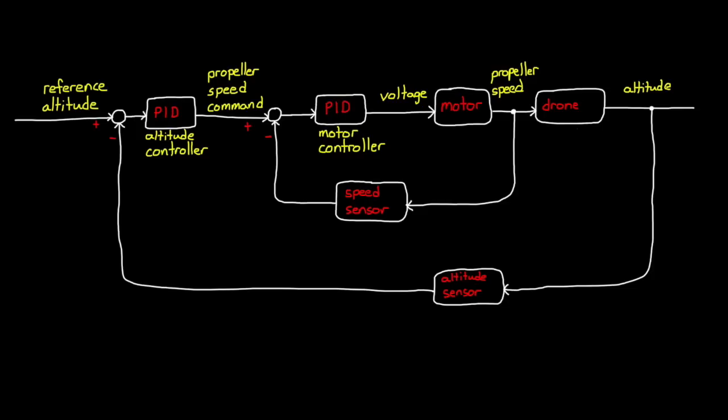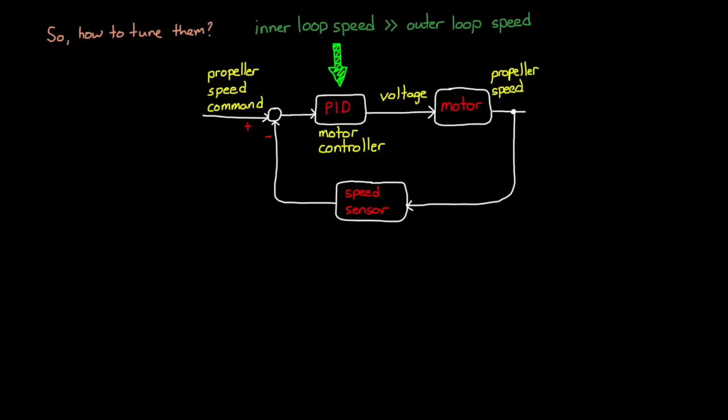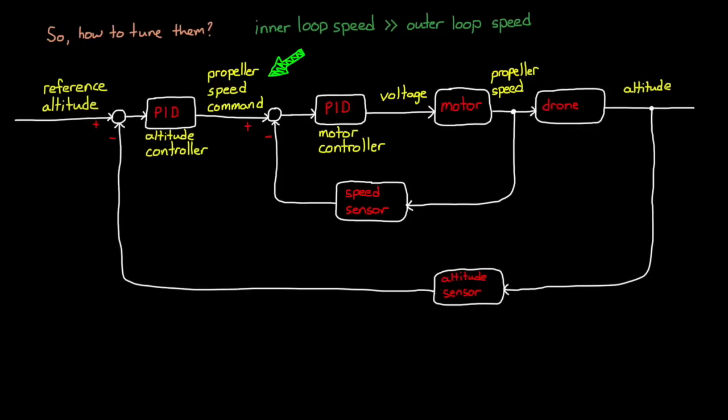Okay, now that we have an understanding of why we need cascaded loops, let's quickly discuss a few ways to tune them. First off, if the inner loop is much faster than the outer loop, that is, the bandwidth of the loop is at least about 5 to 7 times higher, then it is possible to tune them separately. For our drone example, we could tune the motor controller first and make sure that when we command a speed, the motor spins up quickly with the performance that we want. And then, since the inner loop is so fast, when the outer loop requests a motor speed, the motor spins to that speed quickly so that to the outer loop, it might as well be instantaneous.